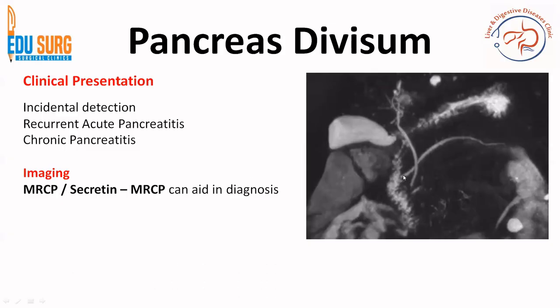On imaging, a classic MRCP appearance shows a separate dorsal duct and ventral duct crossing each other, indicating pancreatic division. We have a separate video on MRCP for better anatomical understanding. Secretin-enhanced MRCP or secretin ultrasound can also aid in diagnosis.